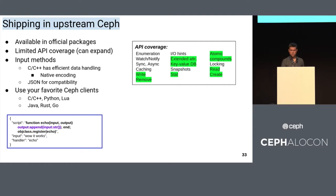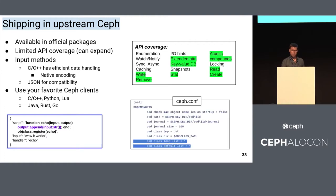This is all in Ceph now — you can go ahead and use it today. There's quite a bit of API coverage for all the object class API, though not necessarily all of it — that can be expanded if you find it's lacking something. The C and C++ APIs for interacting with this are efficient, doing native Ceph encoding. If you want to use Rados libraries like Python or Go, there's also a JSON protocol available, though you have to encode the input data so it could be less efficient. You still need to whitelist the Lua module, but you don't need to whitelist all the functions within it.